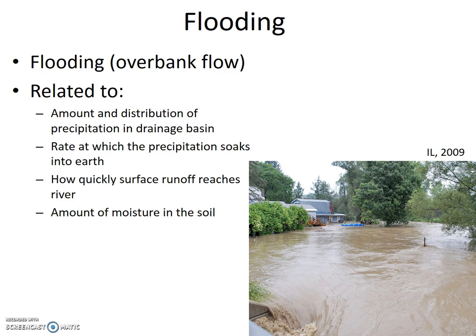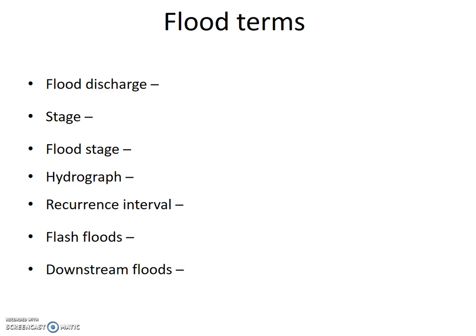These scenarios include the key concepts of: (1) amount and distribution of precipitation and drainage basin, (2) rate at which precipitation soaks into the earth, (3) how quickly surface runoff reaches the river, and (4) amount of moisture in the soil. We will now go over flood-related terms: flood discharge, stage, flood stage, hydrograph, recurrence interval, flash floods, and downstream floods.